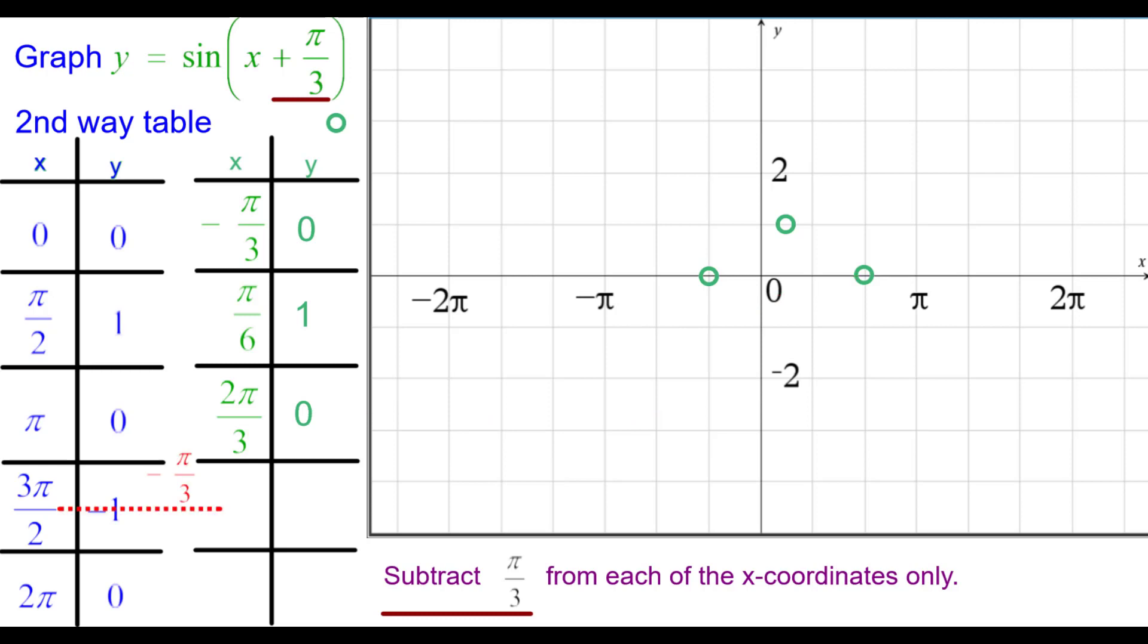3 pi over 2 minus pi over 3. Again, the common denominator is 6. That would be 9 sixths minus 2 sixths is 7 sixths pi. Comma negative 1. And we'll plot that one. And 2 pi minus pi over 3 is going to be 6 thirds pi minus 1 third is 5 thirds pi comma 0.